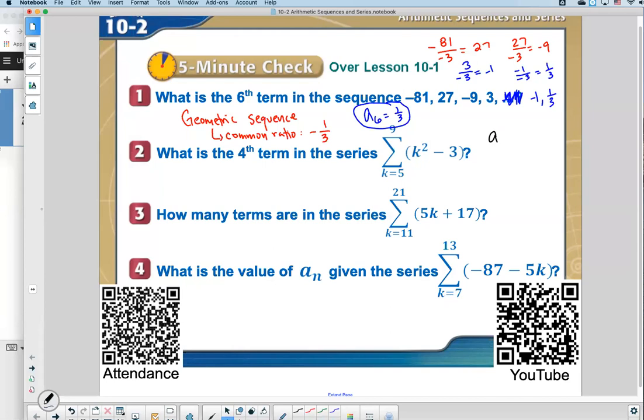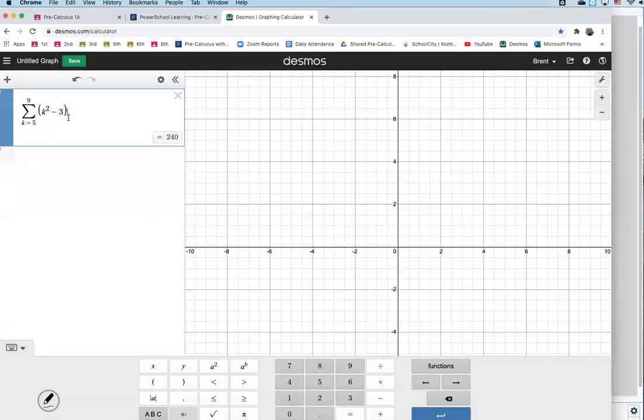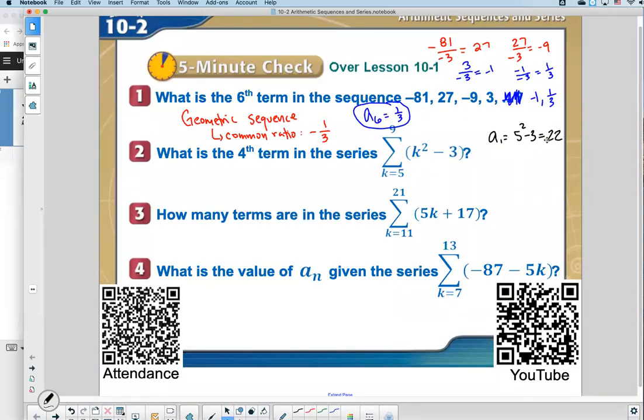So the very first term, what it would do if it was trying to find the first term is it would plug in the five to the equation. And so you'd have five squared minus three. And I'll just tell you five squared, that's five times five is 25. You subtract three, you get 22. And the calculator would store that. If you type this into the calculator. Now remember, I just did this on Desmos over here and got 240. That's the sum. But this problem didn't ask for the sum. It asked for the fourth term. So how did they get to 240?